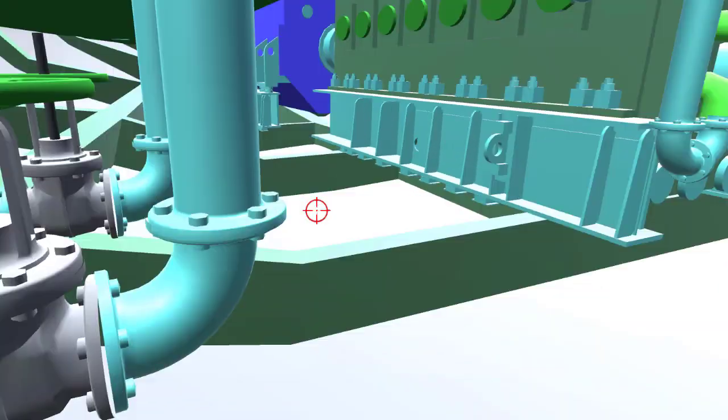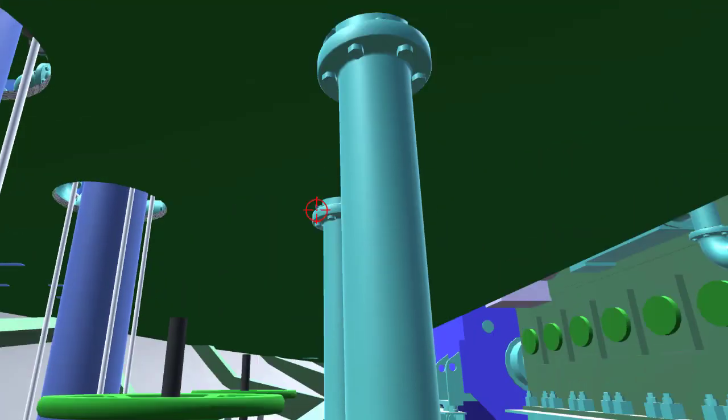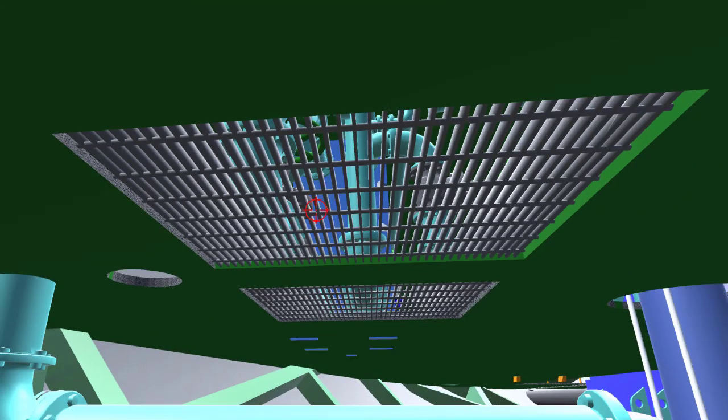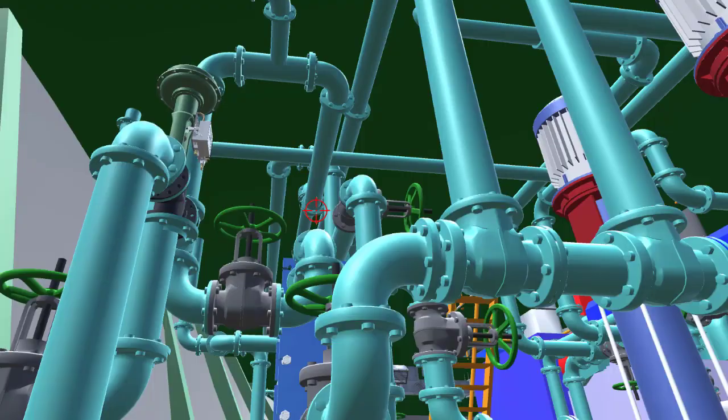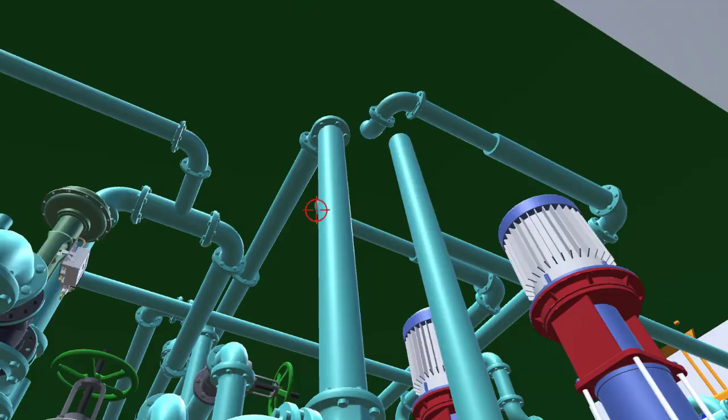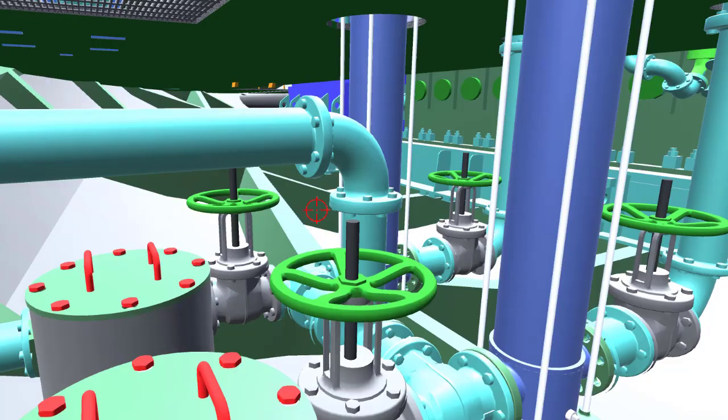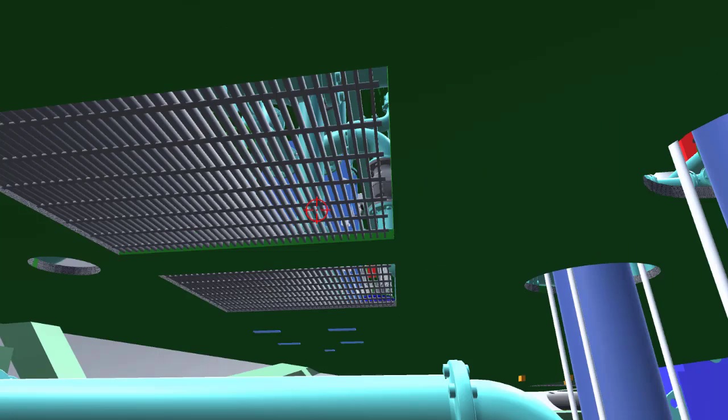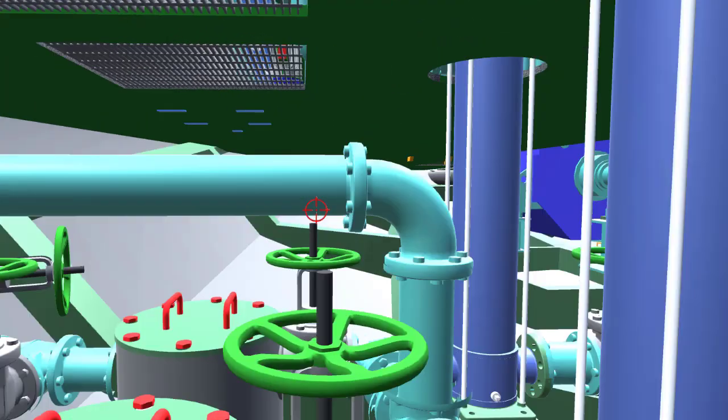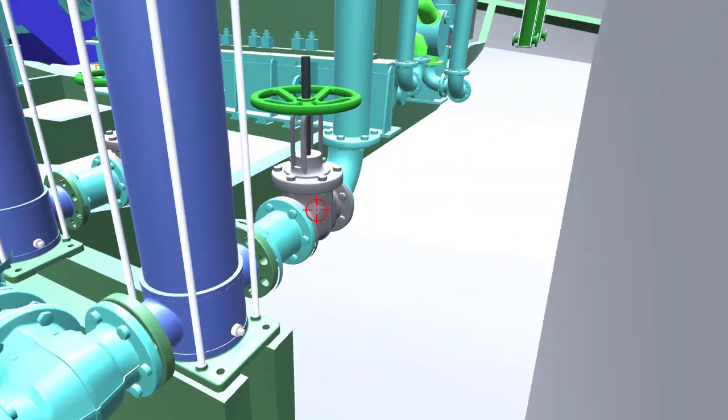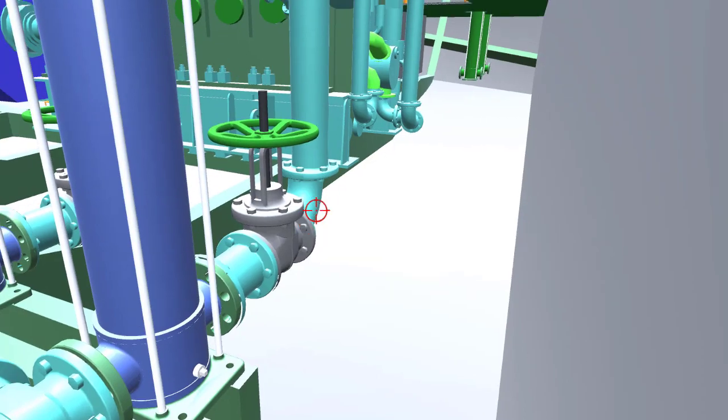You can see here the upper bulkhead suction sea chest and the lower sea chest suction, the valves and strainers. It goes up to the next level. You'll be able to see on top the grills and this pipe is the return pipe for recirculation. Let's go to the next level.